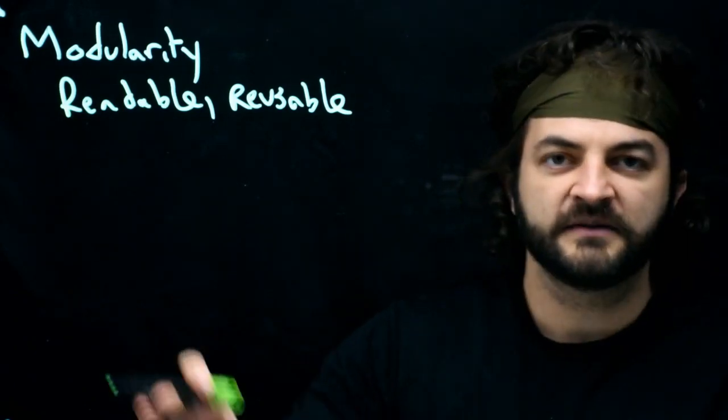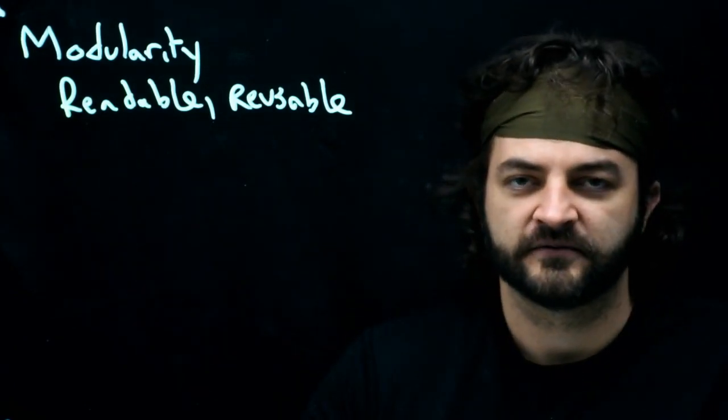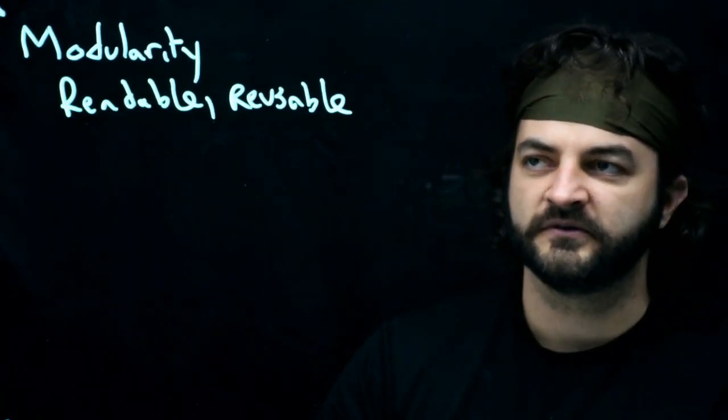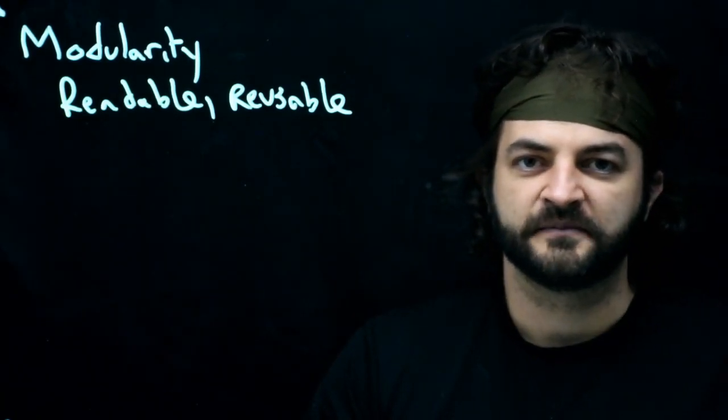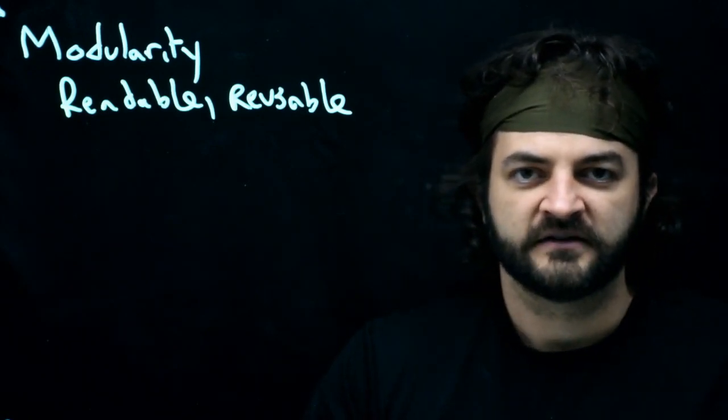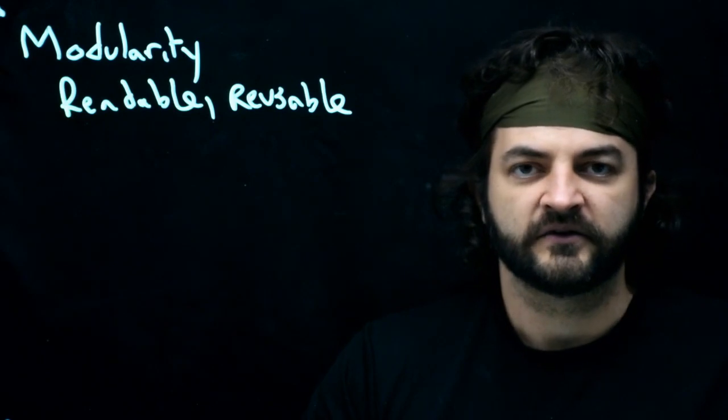We'll want to document them so that when we come back to them after a few weeks, we'll remember exactly what they do. Now, how do we use modular code? We're going to put the functions into helper files, .c and .h files, and then include them in our main.